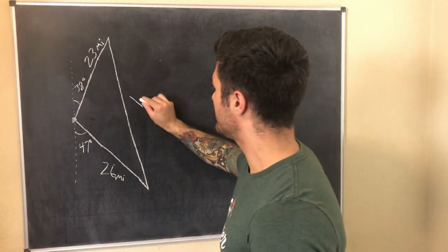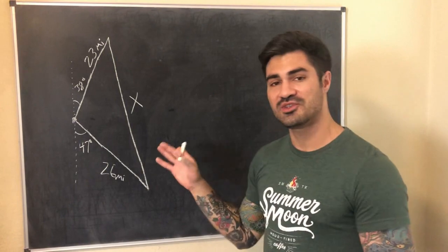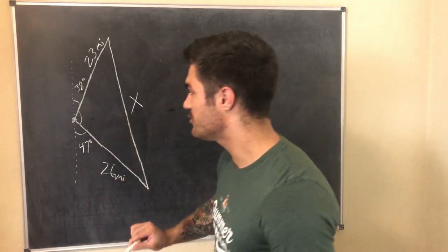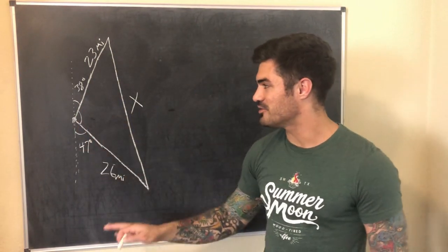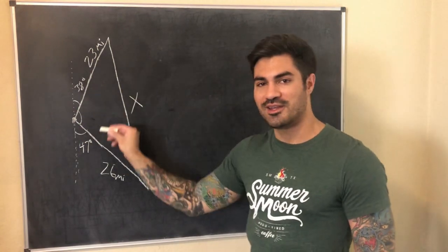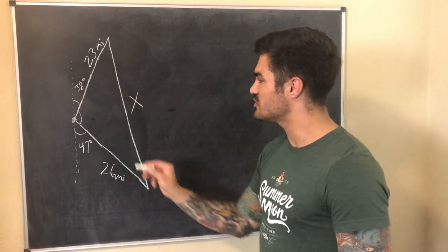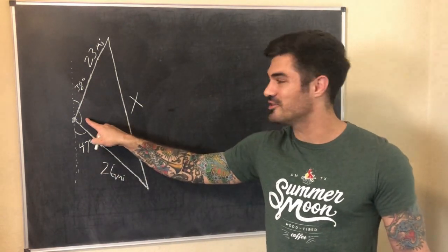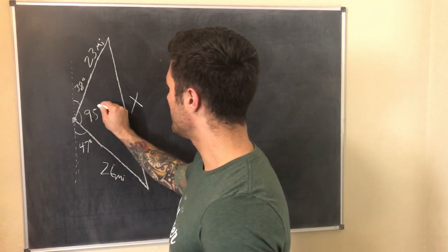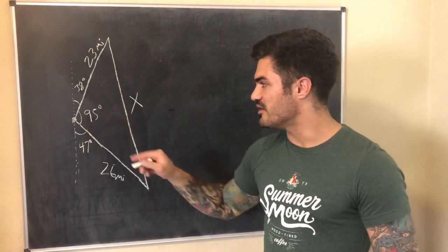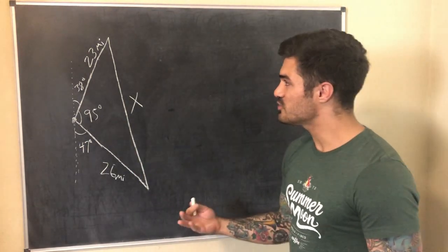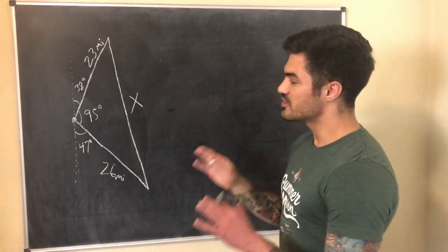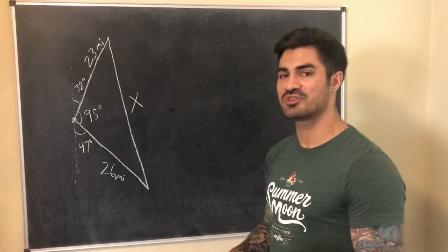Can we use basic geometry to find anything? Yes — the north-south line is straight, so that full angle is 180 degrees. We do 180 minus 38 minus 47, which gives the interior angle of 95 degrees. We can't find the other angles since we don't know the other side lengths well enough for geometry alone. But 95 degrees is all we need.